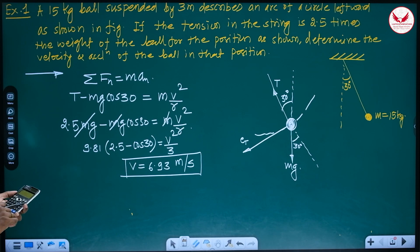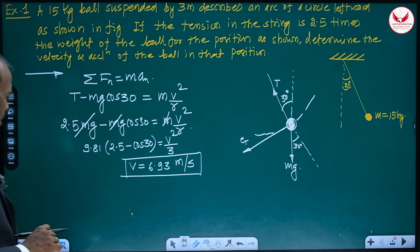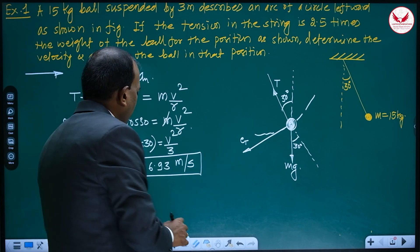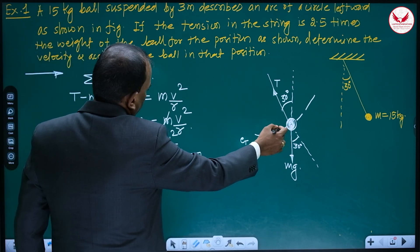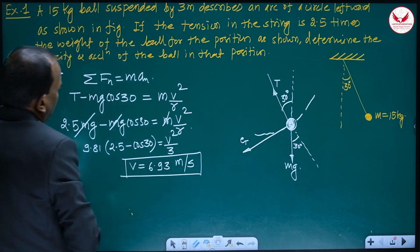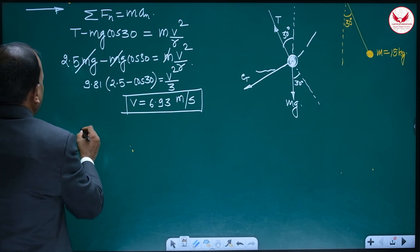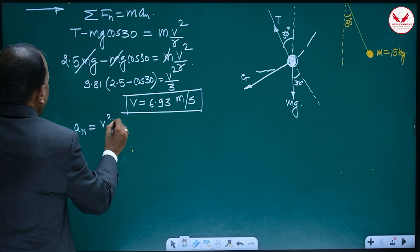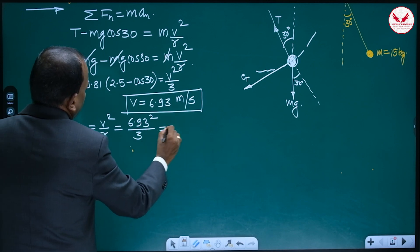Confirming: 9.81 into (2.5 minus cos30) into 3 gives 6.93 meters per second — that is correct. Now, what is also asked is to determine the acceleration. For acceleration, we find both An and At. The normal acceleration An equals V²/R, which is 6.93 squared divided by 3.